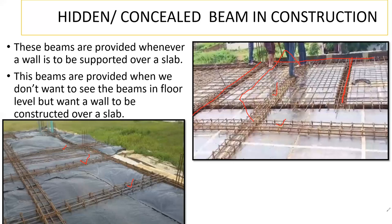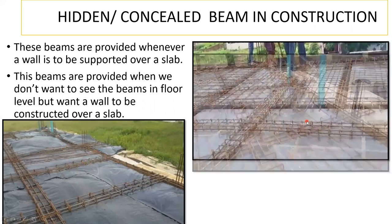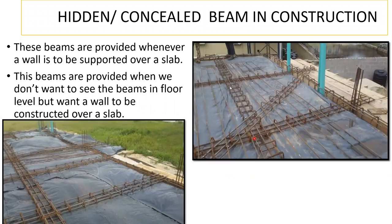This is how a hidden beam looks. You can see one beam here, one beam here, and one beam here. Whereas the other beams you see — those are not hidden beams. When I say hidden, once you pour the concrete, even a regular beam will be hidden, but at floor level a regular beam will still be visible.